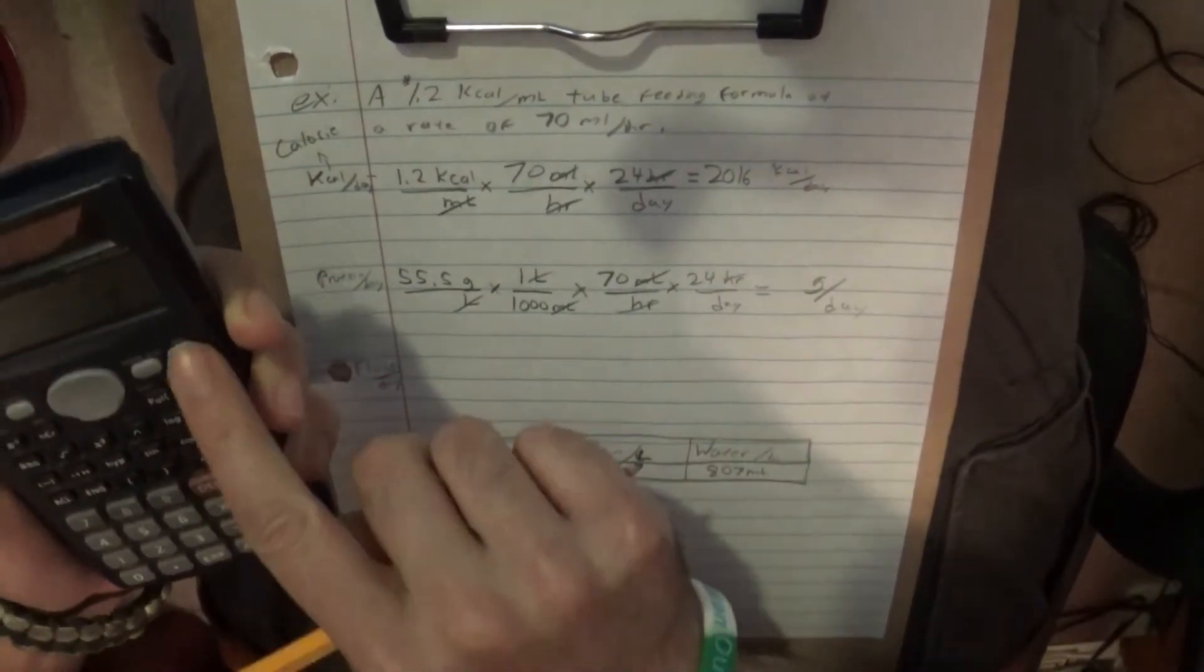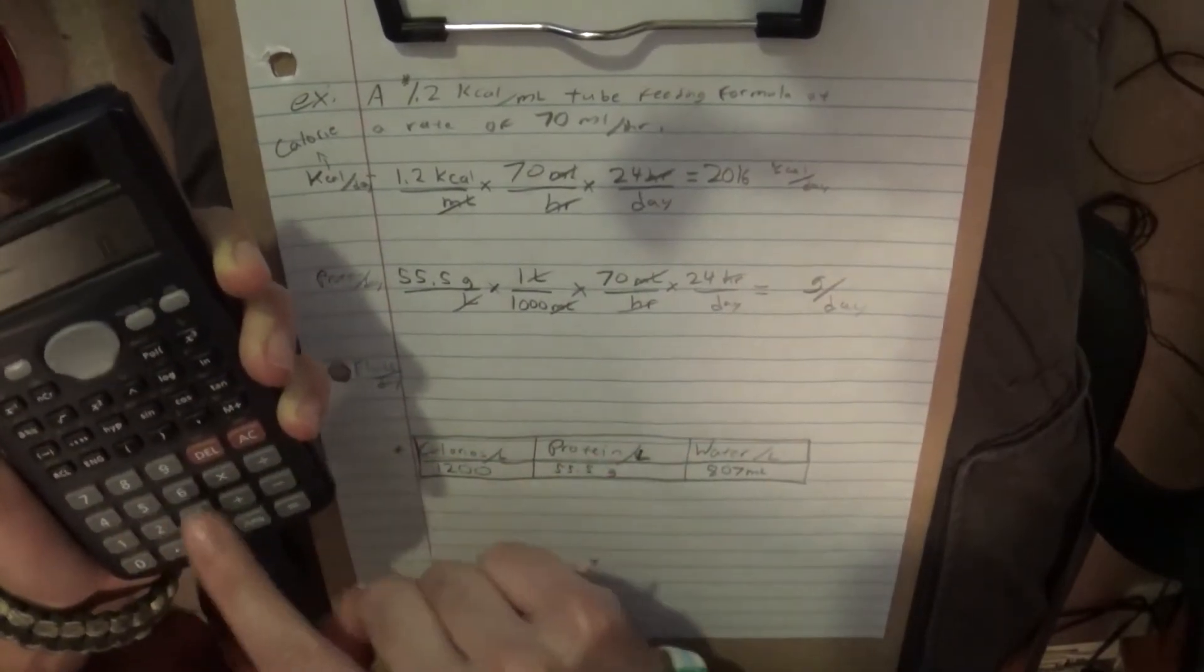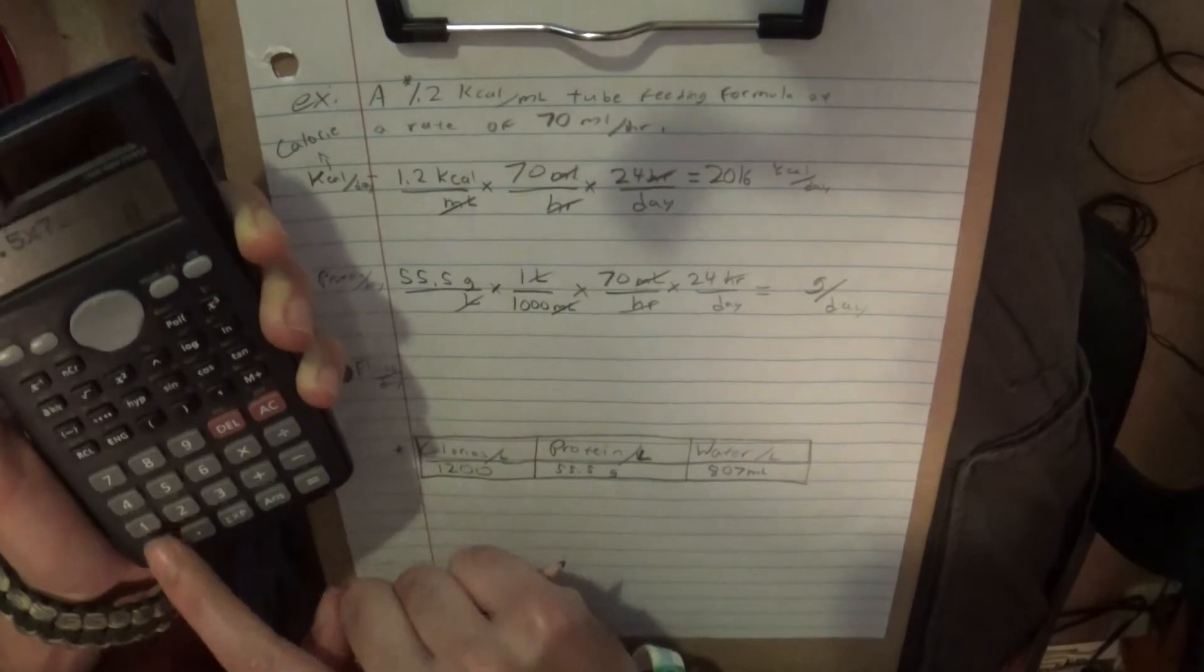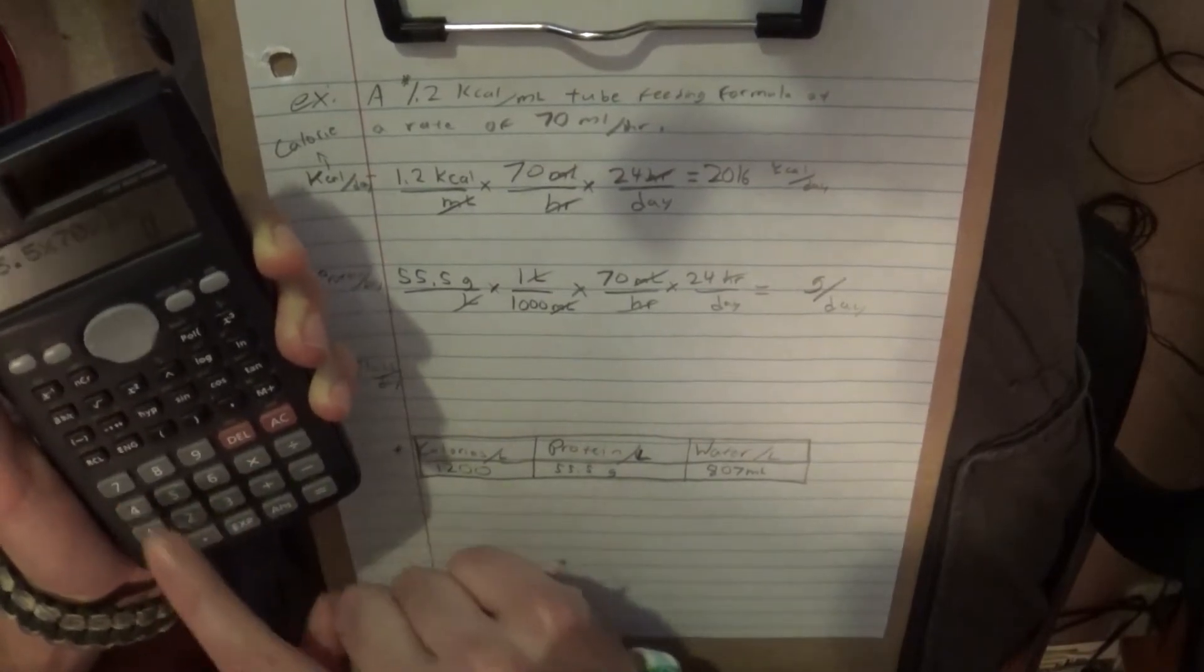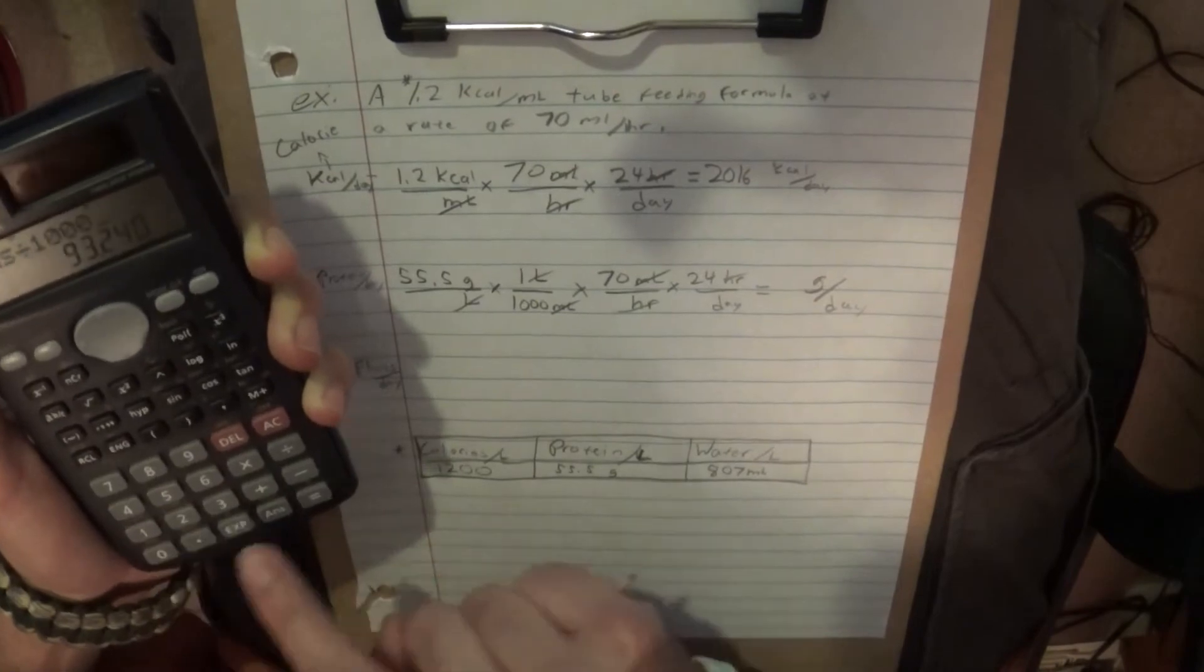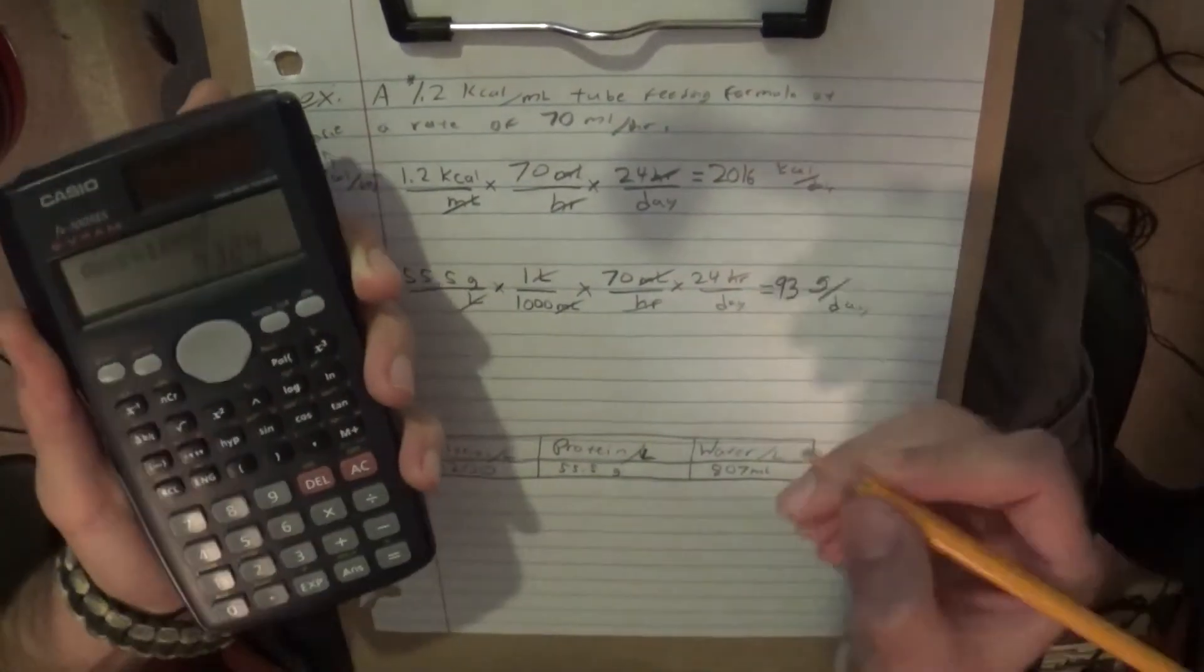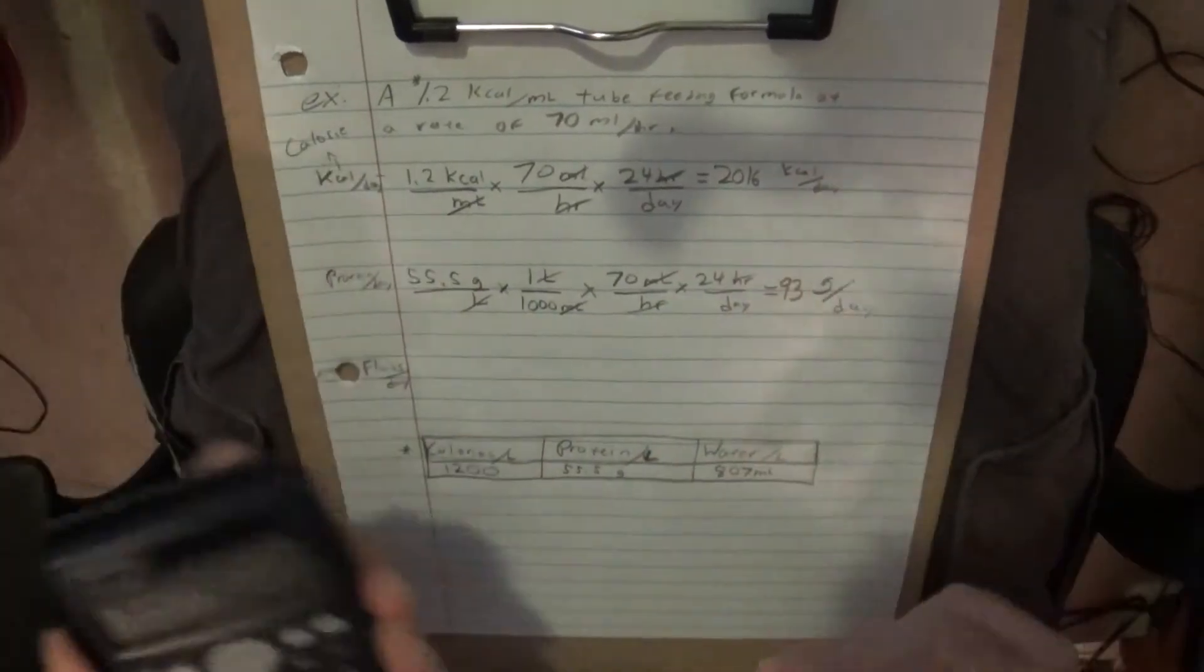So now you multiply that, get 55 times 70 times 24, get that answer, divide that whole thing by 1,000, and then we have, let's just say, 93 grams per day. So there's the solution to that one.